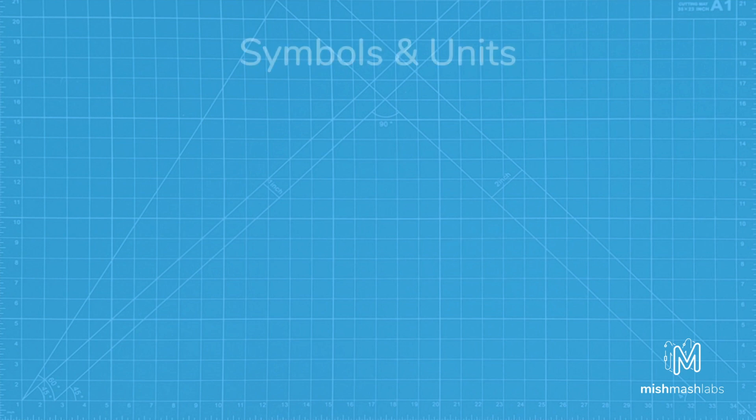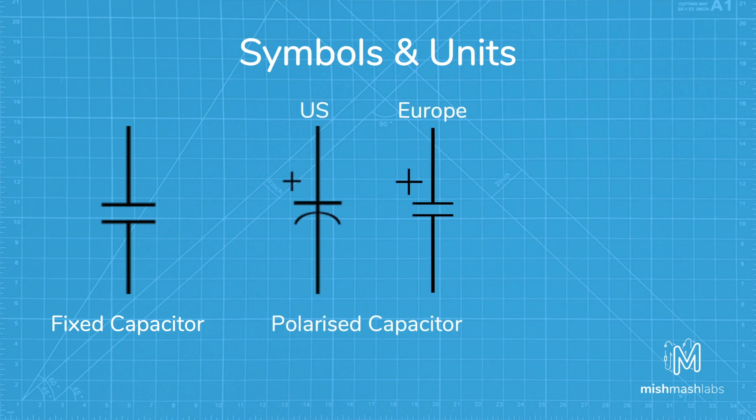There are two main types of capacitor symbols. The first is the non-polarised fixed capacitor. The second is a polarised capacitor. We have different symbols used in the US and in Europe. Polarity is very important when connecting this type of capacitor. And the variable capacitor, which is a capacitor which capacitance can be changed intentionally and repeatedly.